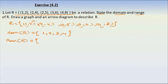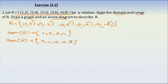The elements are 2, 4, 5, 6, 8. So the range is {2, 4, 5, 6, 8}. The graph is an arrow diagram to describe R.